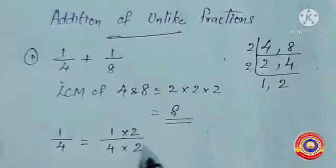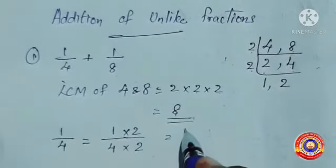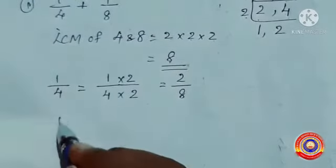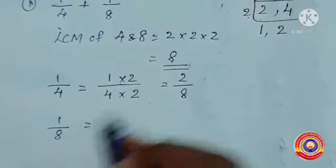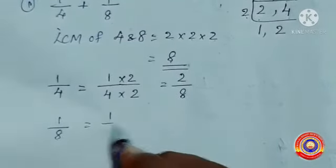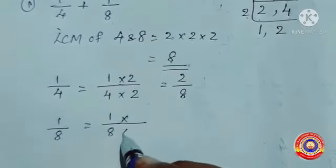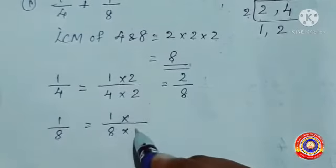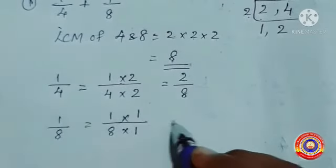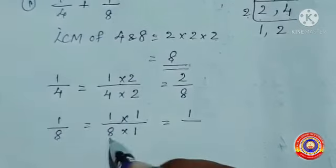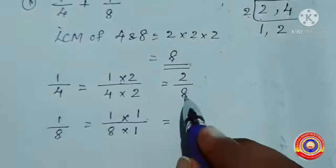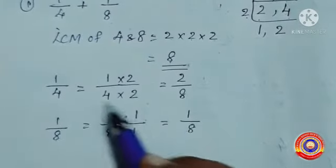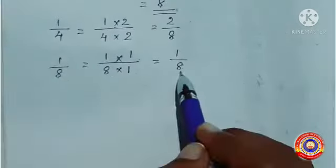For 1 by 4: 4 into 2 is equal to 8, so multiply 2 with the numerator and denominator. 1 into 2 equals 2, and 4 into 2 equals 8. So 1 by 4 is equal to 2 by 8. For 1 by 8: the denominator 8 into 1 equals 8. Multiply 1 with the numerator and denominator. 1 into 1 is equal to 1, and 8 into 1 is equal to 8. Now we have the like fractions: 2 by 8 and 1 by 8.